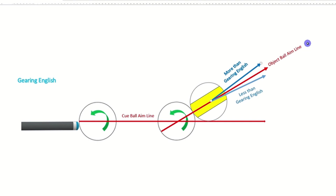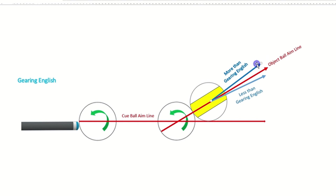Understanding English is the key to accurate aiming in billiards. When aiming directly at a pocket, applying exactly the right amount of gearing English ensures the object ball rolls straight in. Less than gearing English causes the object ball to be dragged along with the cue ball, going long and missing the pocket — to compensate, aim short of the pocket. This applies to all rolling cue balls, as they inherently have less than gearing English. More than gearing English pulls the object ball toward you due to excessive spin — compensate by aiming to the same side as the spin applied. This is the only situation where throw becomes negative.